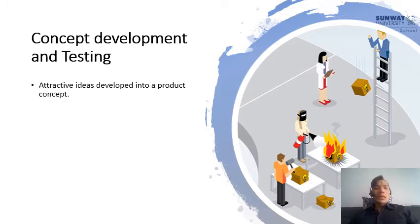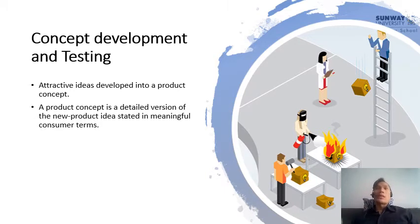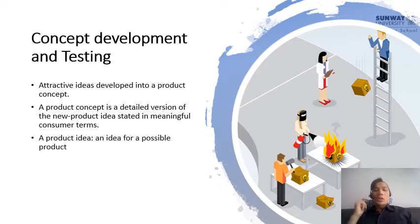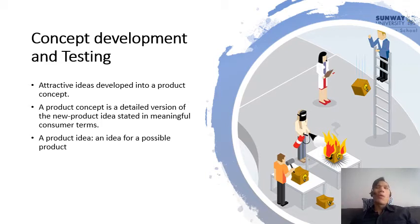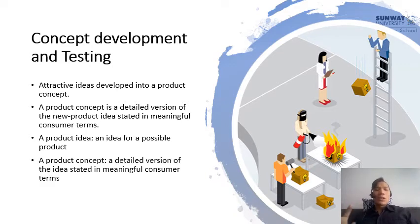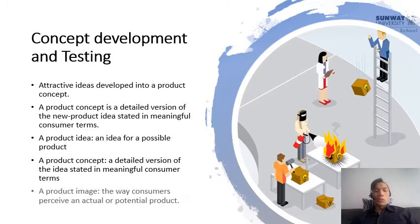In testing concepts, we make sure that the attractive ideas are further developed into product concepts. A product concept is a detailed version of the new product idea stated in meaningful terms for the consumers. A product idea is a possible idea for a product — it could be a solution that meets a consumer need — while the concept is a detailed version of that idea stated in meaningful consumer terms.